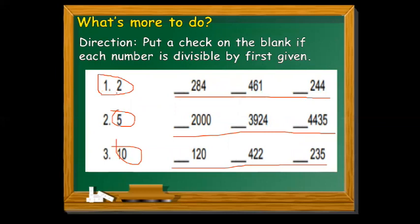First one, divisible by 2. For divisibility by 2, we need to check the 1's digit — if it is 0, 2, 4, 6, or 8. For the first given number, the 1's digit is 4, so it is checked — it's divisible by 2. For the next number, the 1's digit is 1, which is not 0, 2, 4, 6, or 8, so it is not divisible by 2. For 44, the 1's digit is 4, which is in the list, so it is divisible by 2.